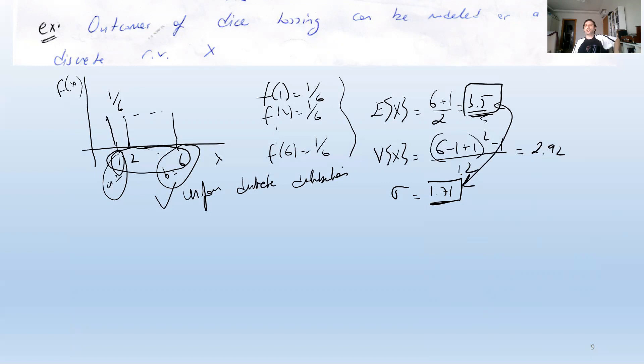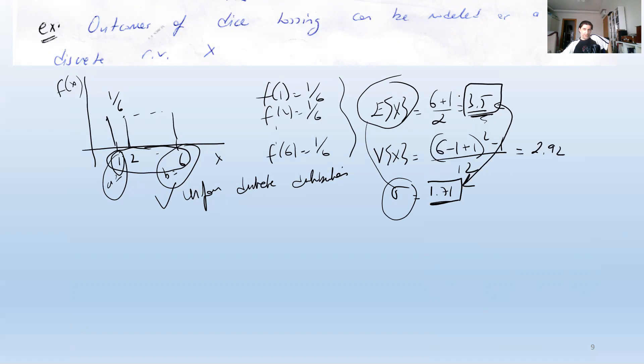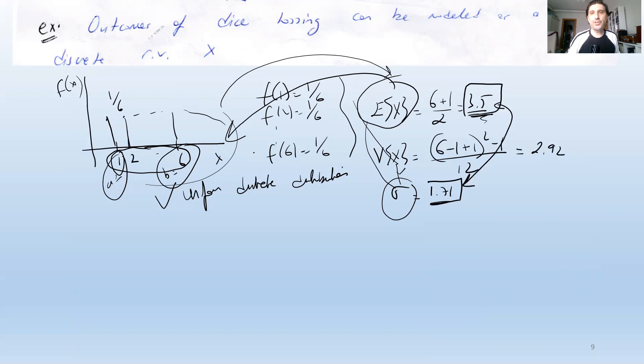These two values — expected value 3.5 and standard deviation 1.71 — give a nice summary of the distribution. Just as we use sample mean and standard deviation to visualize data, we can use the expected value and standard deviation of a distribution to visualize the whole probability mass function to some extent.